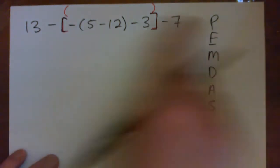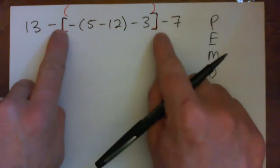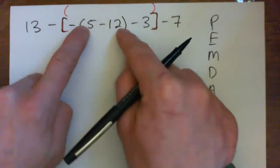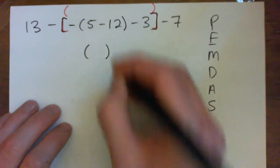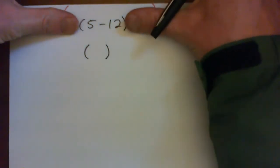So we do parentheses first. The first parenthesis you come across is a square bracket, but inside there, there's more parentheses. So we kind of do the innermost parentheses first, right? So we figure out 5 minus 12. So let's just figure out 5 minus 12. That's your first step, and then just write everything out the same.